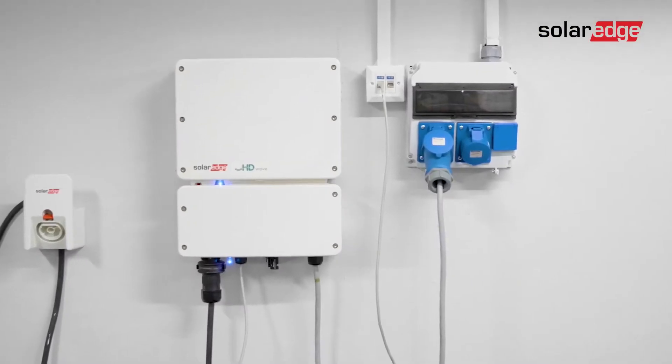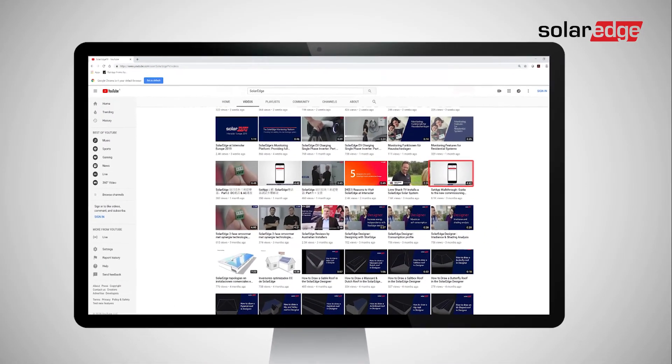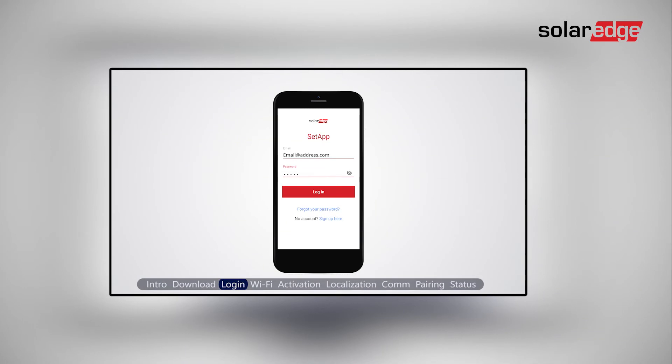That's it. You're all done. The inverter is now connected to DC, AC and communication. For commissioning the installation, please use the setup walkthrough movie. I'll see you next time.